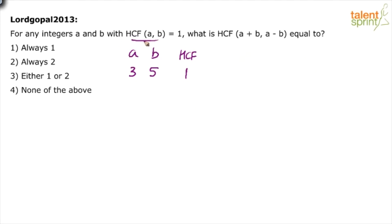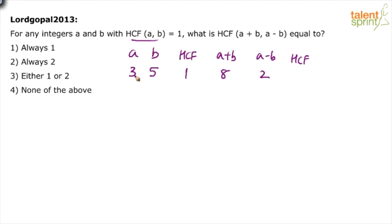This satisfies our condition: HCF of a and b equals 1. Now let's calculate a+b and a-b. With a=3 and b=5: a+b = 8, a-b = 2. For 8 and 2, the HCF is 2.